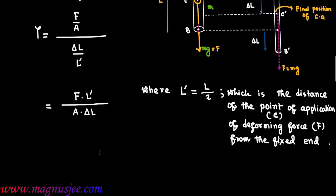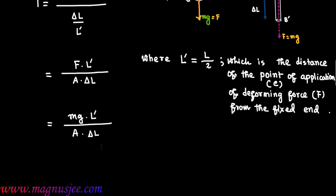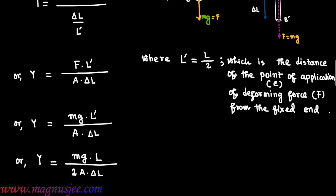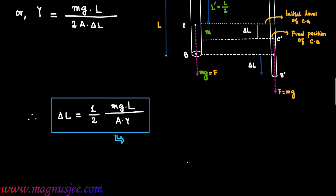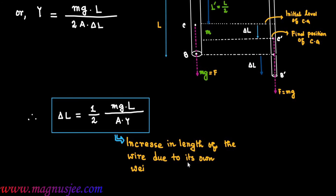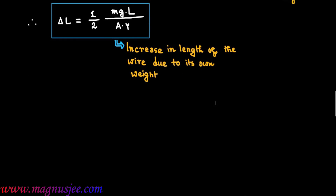Y equals F into L prime divided by A into Delta L. Putting the expression of L prime: Y equals Mg dot L prime divided by A into Delta L, where Mg is the own weight of the wire. So Y equals Mg dot L divided by 2A dot Delta L. Therefore, Delta L equals (1/2) Mg L divided by A dot Y, which is the elongation or increase in length of the wire due to its own weight.